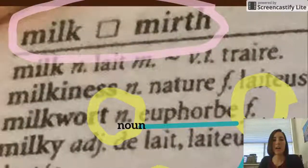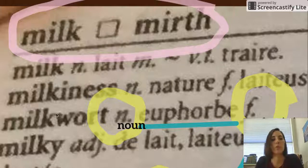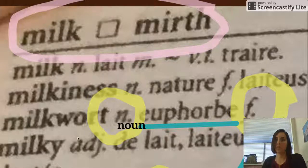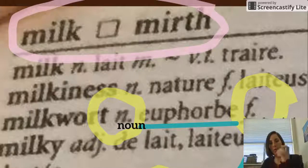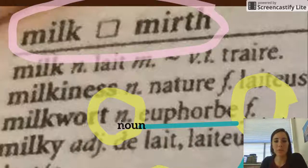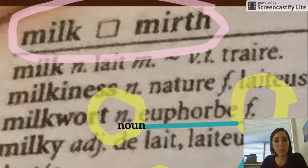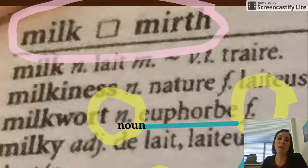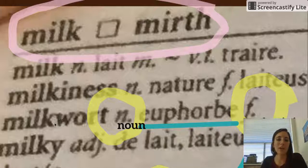Dictionaries give us a lot of really helpful information. If you're looking up a word like 'milkwort,' when you look it up, it will tell you a couple of different things about this word in French. First, it'll tell you that milkwort is a noun — this 'n.' in italics is an abbreviation for the part of speech. Our part of speech here is a noun: a person, place, or thing. Then it will give you the definition: 'euphorbe.' Euphorbe is how you say milkwort in French, and you know that it's a noun.